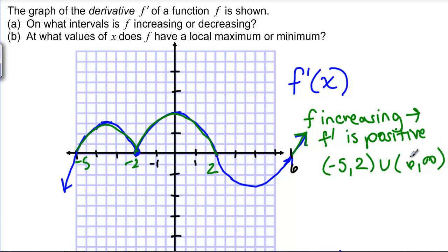You may be asking yourself what is happening there at negative 2 — it's flattening out and then continuing to increase, something like that.